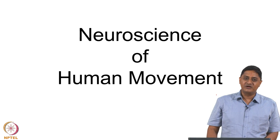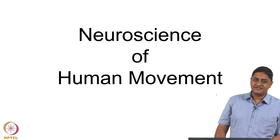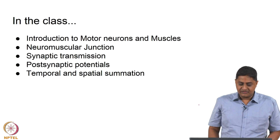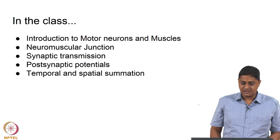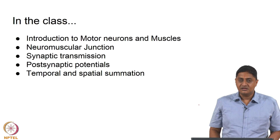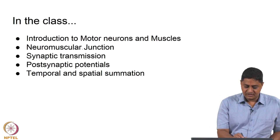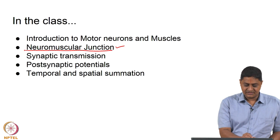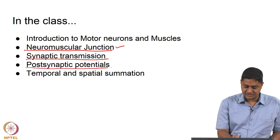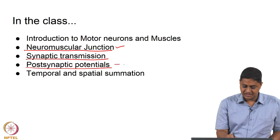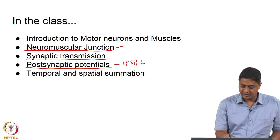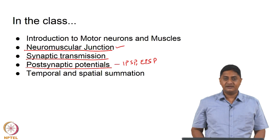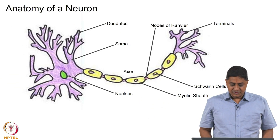Welcome to this class on the neuroscience of human movement. In today's class we will be discussing the neuromuscular junction. We will be introducing the notion of motor neurons and muscles and muscle fibers, discussing the concept of neuromuscular junction in relatively good detail, synaptic transmission, postsynaptic potential and its types — IPSP and EPSP — inhibitory postsynaptic potential and excitatory postsynaptic potential, and temporal and spatial summation.